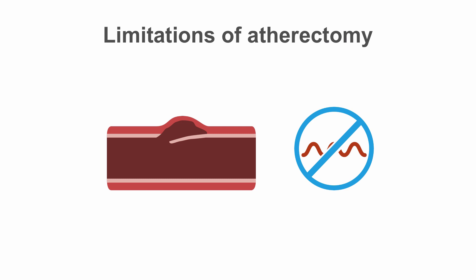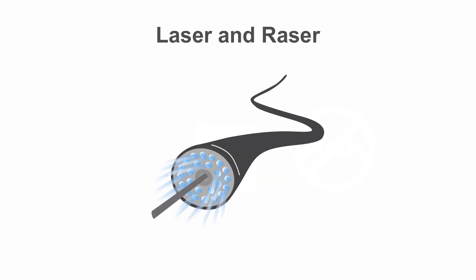If you can't insert a rotor wire through a lesion, you can't rotoblate. Occasionally, people use laser catheters to create enough space to allow the passage of a rotor wire to continue then with rotational atherectomy. This works because laser catheters can travel over any normal workhorse wire.